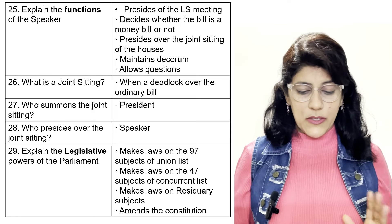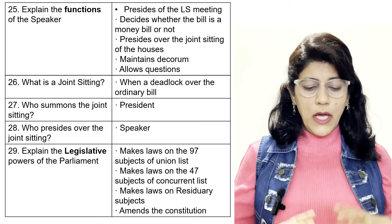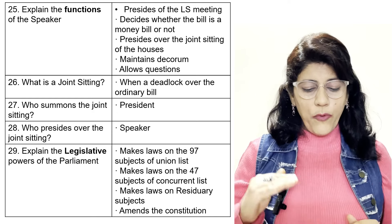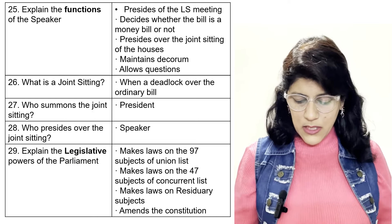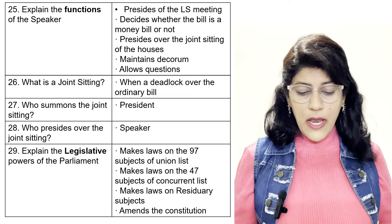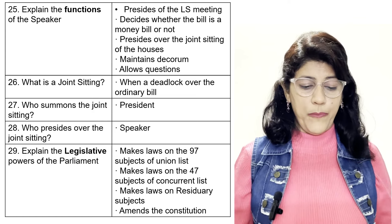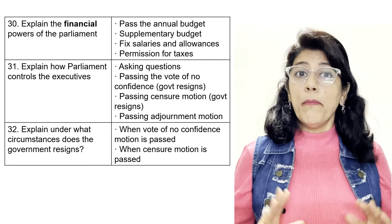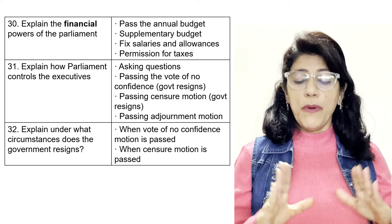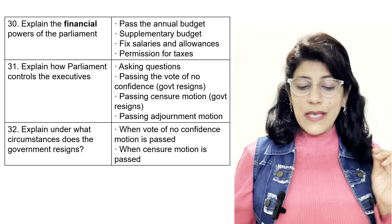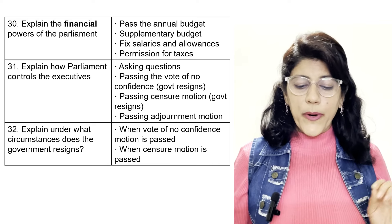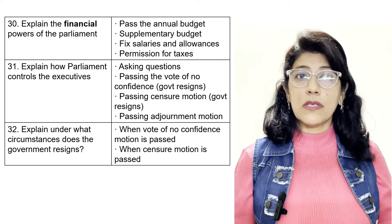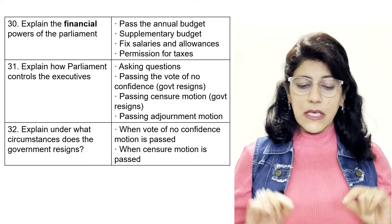What is a joint sitting? When there is a deadlock over an ordinary bill. Who summons the joint session? The President. Who presides over the joint sitting? The Speaker. Legislative powers of Parliament: make laws on 97 subjects of the Union List, make laws on 47 subjects of the Concurrent List, make laws on residuary subjects, and amend the Constitution.